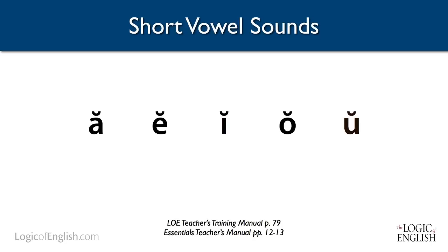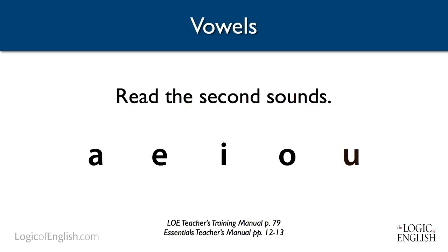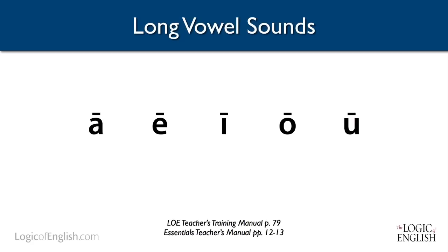Notice we put a breve over it. Breve, by the way, means short — like brevity, abbreviation — it's the root meaning short. So a breve is the marking for a short sound. Now let's read the second sounds of these vowels: a, e, i, o, u. The second sounds of these vowels are called the long sounds, and the long sounds are marked with a line like this. Take a moment and write the long sounds for the vowels in the training manual.